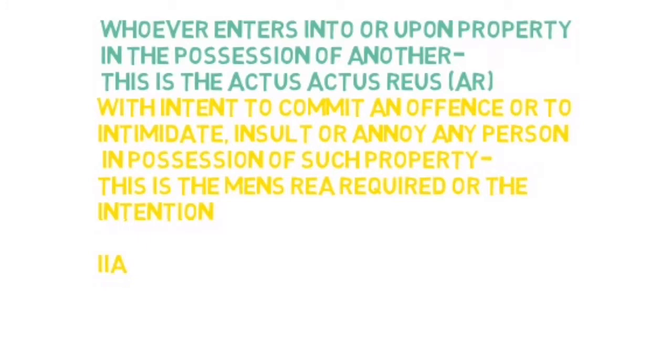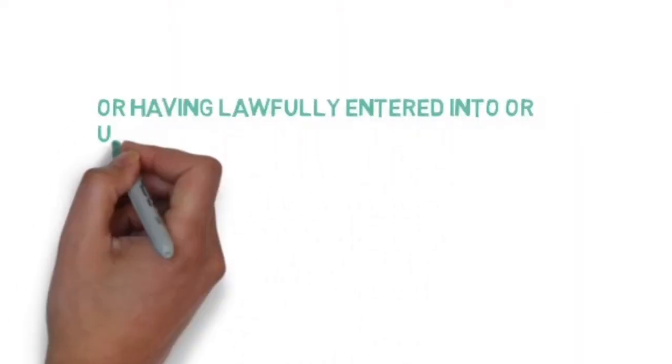The actus reus is entering upon the property which is in possession of someone else, and the intention of entering should be to intimidate, insult, or annoy — let's just call it IIA. That is your intention, and if that is your intention, then you're committing criminal trespass.